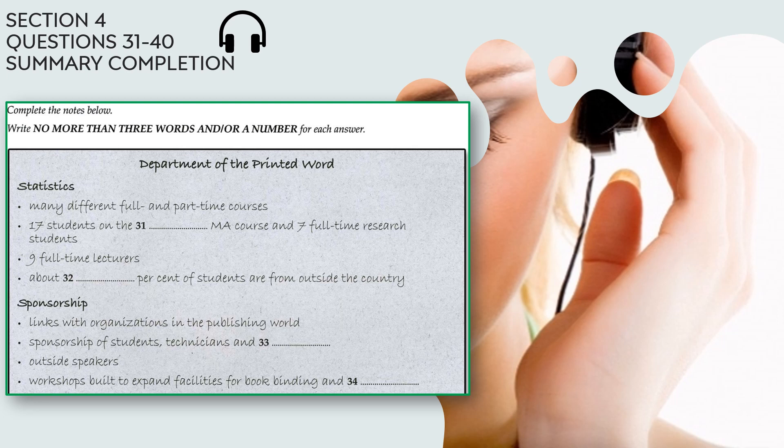Some statistics to start with. The first intake of undergraduate students consisted of 20 students, which rose to 37 in the second year. And we now have about 50 in the first year, doing a wide range of courses full and part-time. We have a thriving research department with 17 students on the taught MA course and seven students doing research full-time.